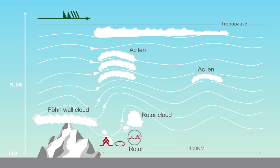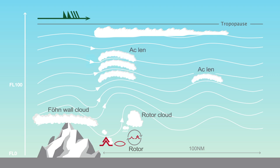For crews flying close to the tropopause downwind of mountains, pay particular attention to forecasted or observed lenticular clouds, as they may indicate the presence of severe clear air turbulence. Remember that this can occur hundreds of miles downwind of the mountain range. Furthermore, aircraft performance can be affected in the descending part of the atmospheric wave motion.